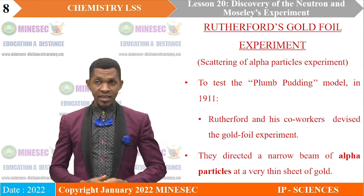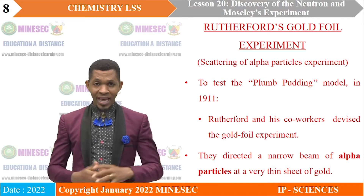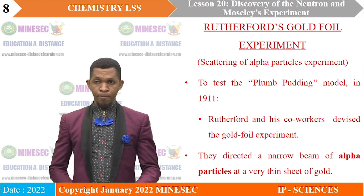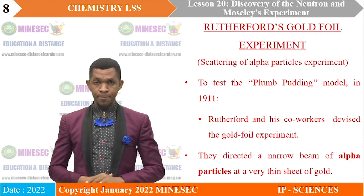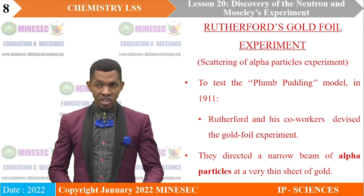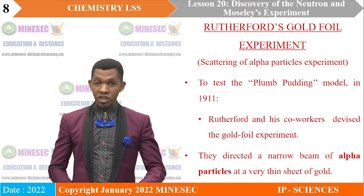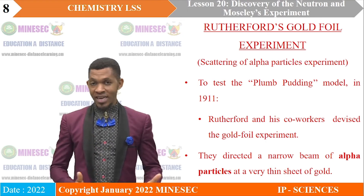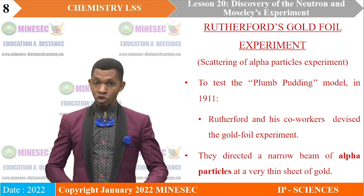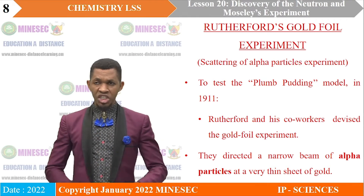in 1911, Rutherford and his co-workers Geiger and Marsden decided to test the plum pudding model. They devised the gold foil experiment. In this experiment, they directed a narrow beam of alpha particles at a very thin sheet of gold. Remember, an alpha particle is a helium nucleus — a helium atom that has lost its two electrons. It has a mass of four and atomic number two.